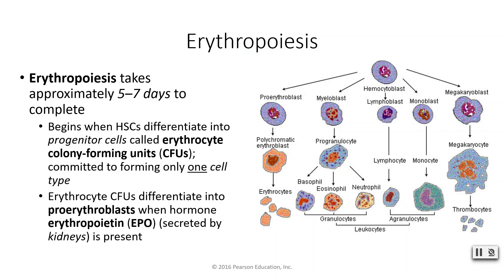Erythropoiesis takes anywhere between five and seven days from start to finish. The hemocytoblast can undergo differentiation to become different types of cells — pro-erythroblast, myeloblast, lymphoblast, monoblast, megakaryoblast — and can further differentiate into mature cells. The hemocytoblast on the far left will differentiate into erythrocytes, red blood cells. That same hemocytoblast stem cell will ultimately also become white blood cells — leukocytes — and thrombocytes, your platelets. Everybody traces back to that hemocytoblast.